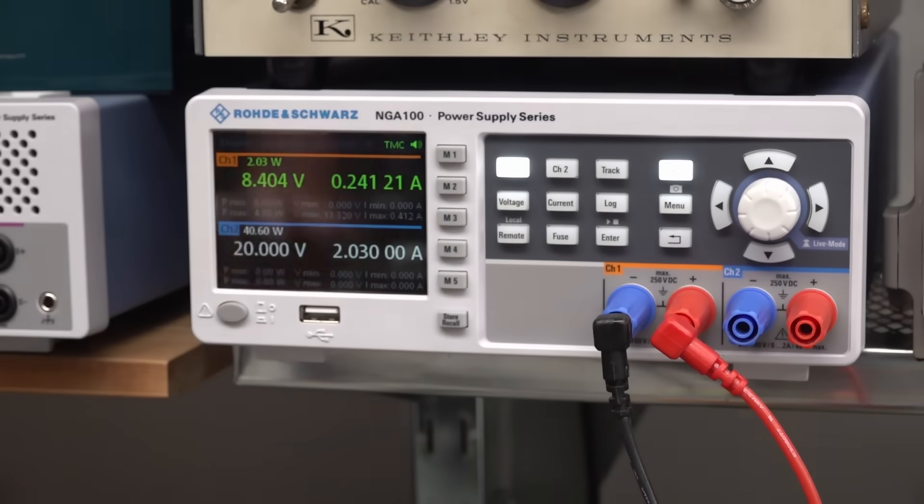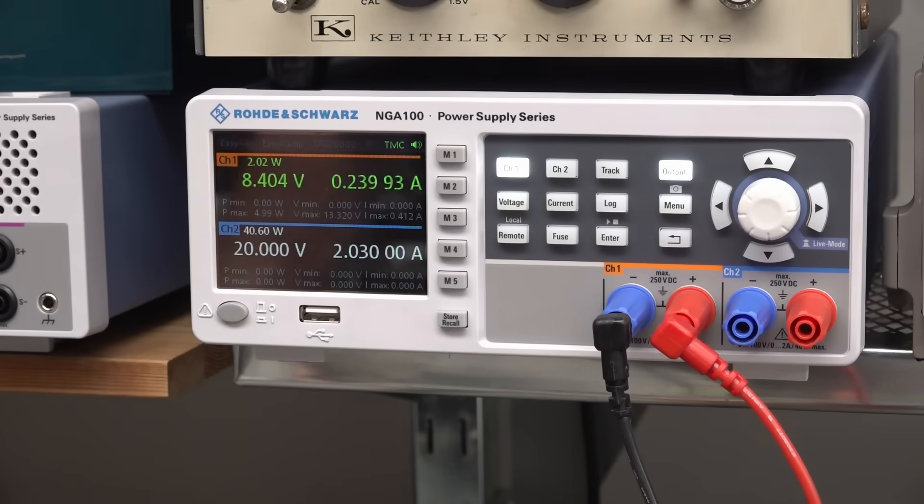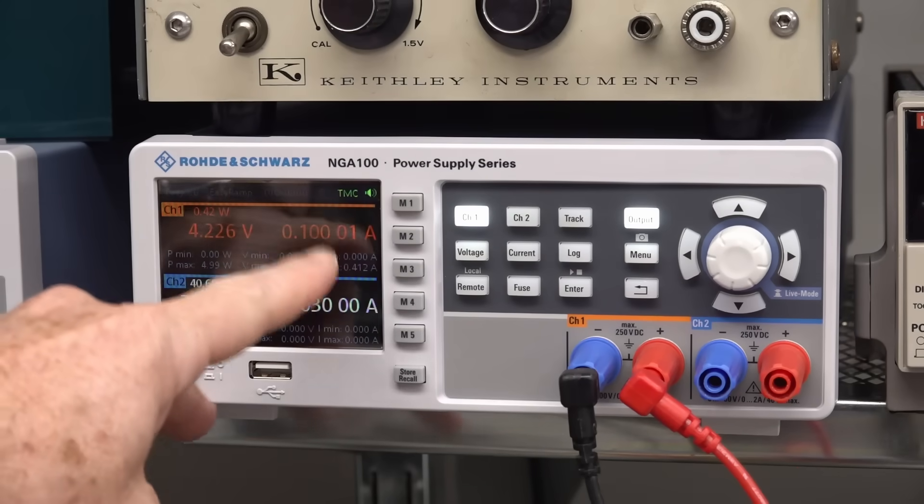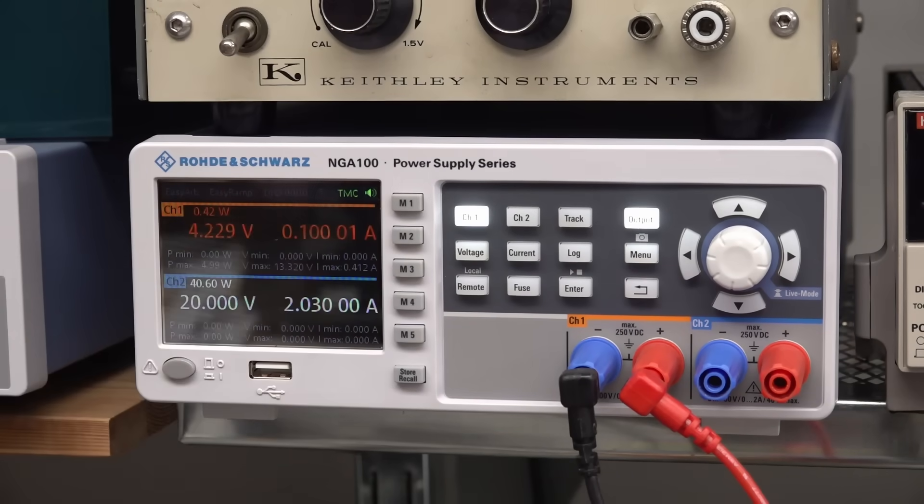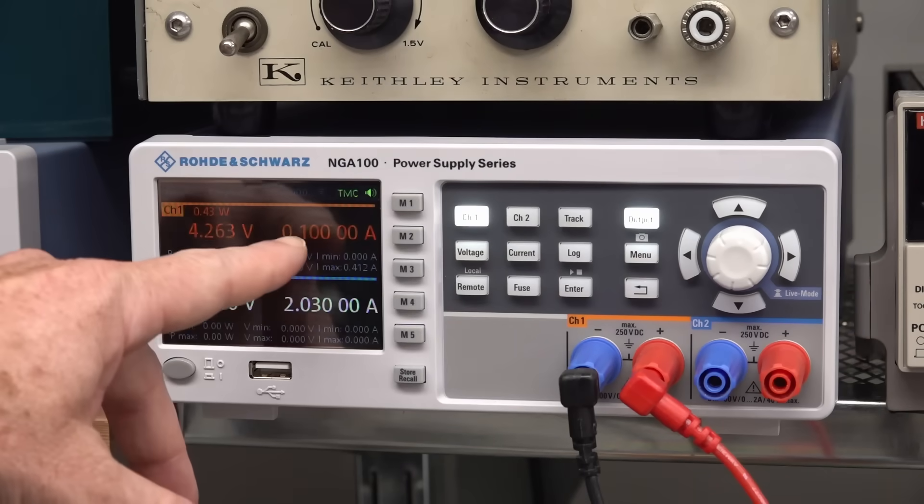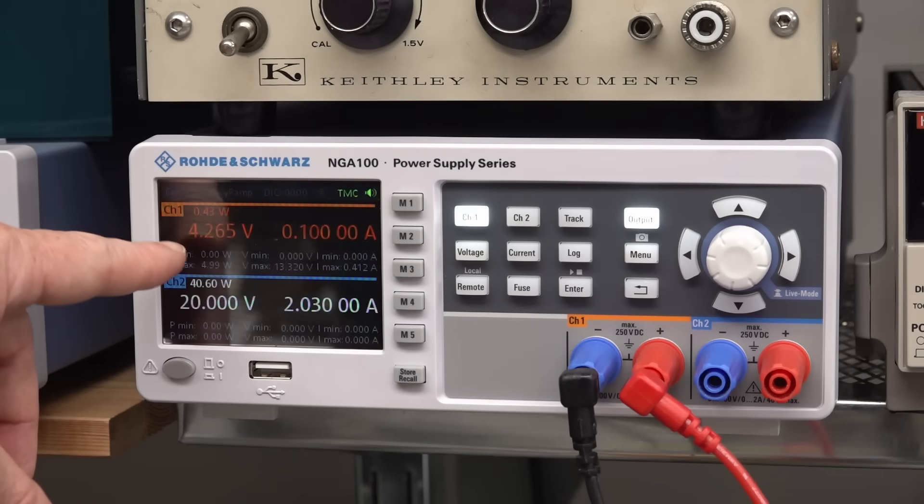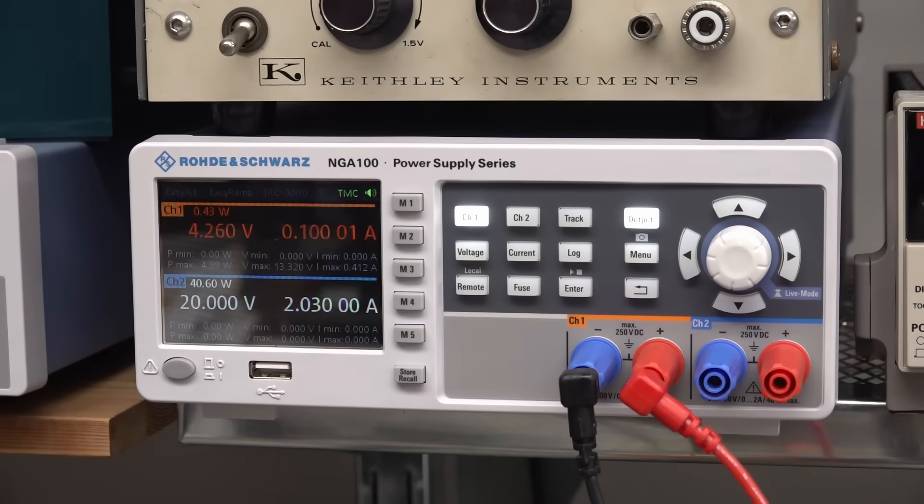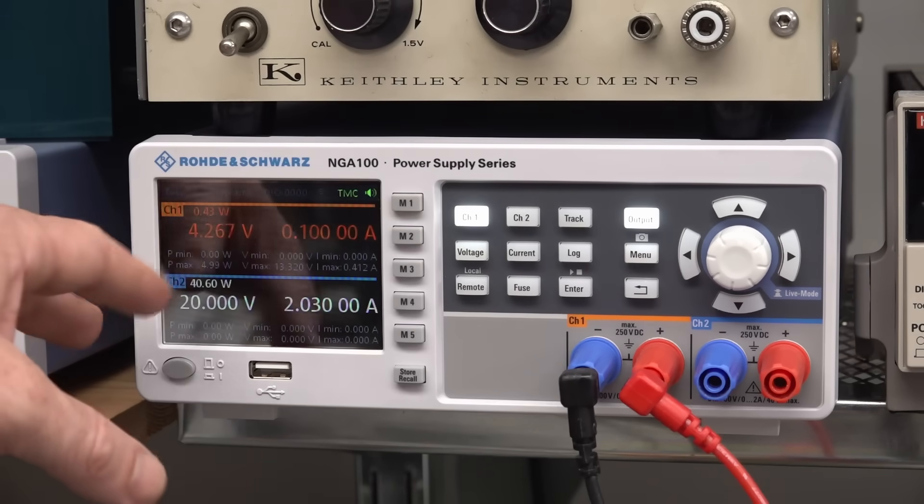See what happens. There you go. It's charging at 240 milliamps. So it's doing something. Okay, so what I've done is I've lowered that down to 100 milliamps. So we're in constant current charge mode instead of we were in constant voltage charge mode before.